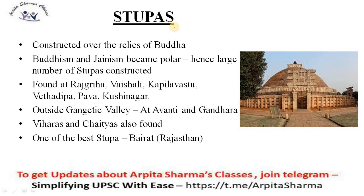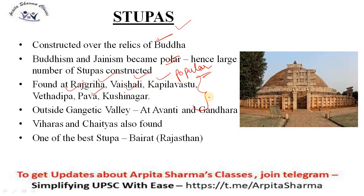Then we come to one of the most important topics: stupas. Stupas were constructed over the relics of Buddha — remains after Buddha's death. Because Buddhism and Jainism became popular, a large number of stupas were also constructed at that time. The most important and prominent stupas are found at Rajgriha, Vaishali, Kapilavastu, Veta Dipa, Pava, and Kushinagar — places connected to where Buddha or Lord Mahavir were born, attained enlightenment, or gave their first sermon.